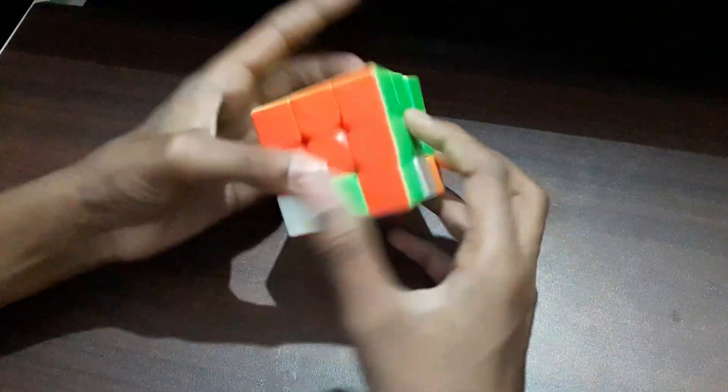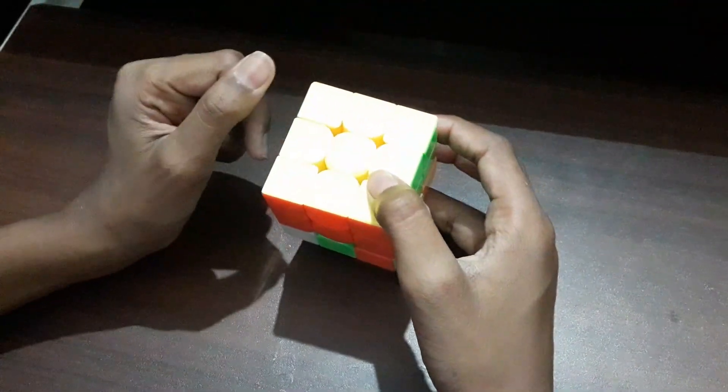So there we go. We get a J. After this we can solve the cube just as we normally do.